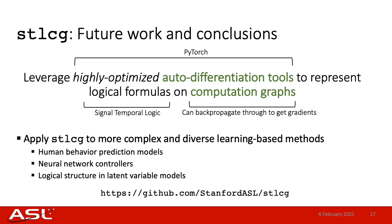In summary, we have presented STLCG, a technique that leverages highly optimized auto-differentiation tools to represent STL robustness formulas on computation graphs so that we can backpropagate through them to obtain gradients. Our work provides the groundwork for interesting future research directions, such as applying STLCG to more complex and diverse learning-based methods, including human behavior prediction, neural network controllers, and adding logical structure in latent variable models. You can find all the code on our GitHub. Thank you for your attention.